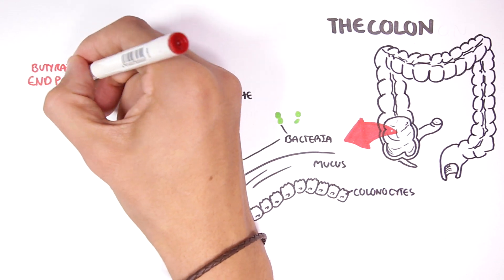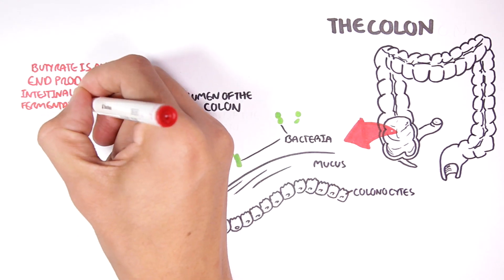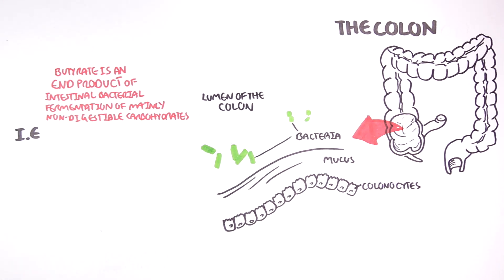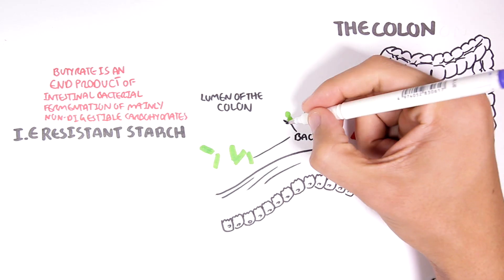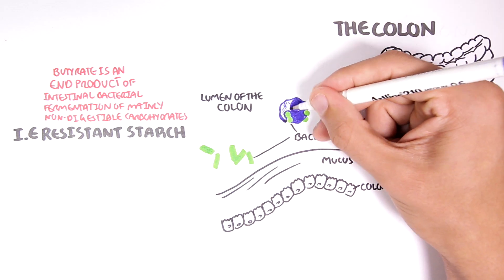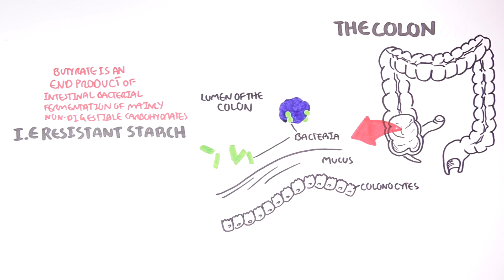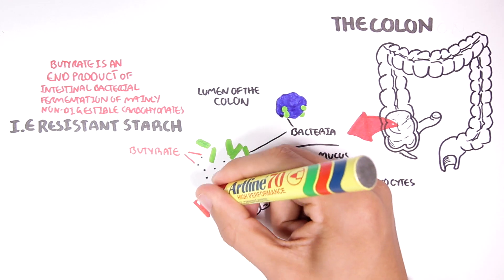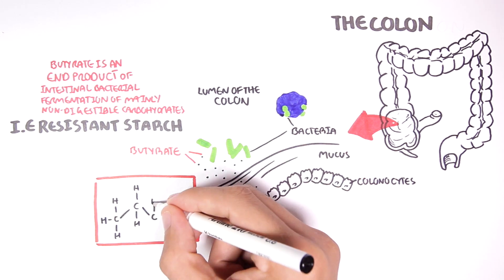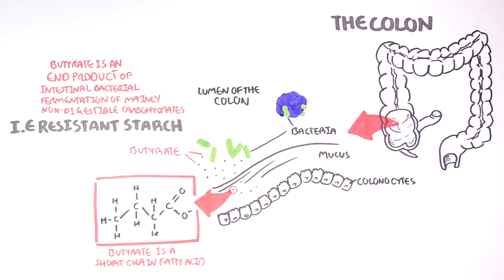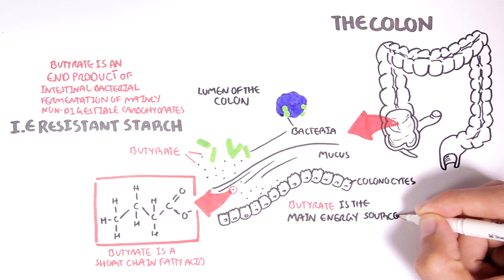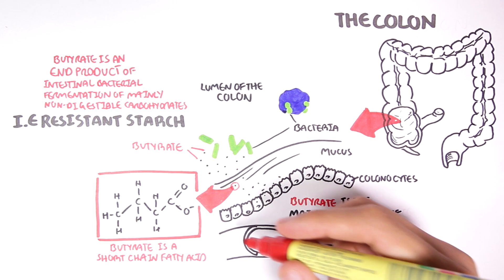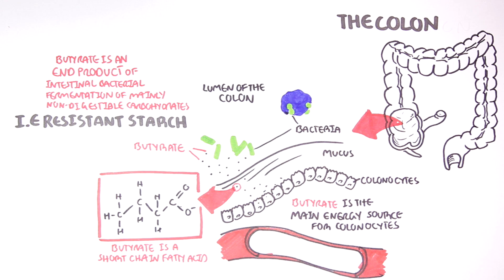Butyrate is an end product of intestinal bacterial fermentation of mainly non-digestible carbohydrates such as resistant starch. Here we have resistant starch which has reached the colon. Bacteria will ferment the resistant starch and through cross-feeding with other bacteria, butyrate is produced. Butyrate is a four-carbon short-chain fatty acid and is absorbed by the colon cells, serving as the main source of energy for these cells.